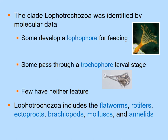Some lophotrochozoans develop a lophophore — a large structure with ciliated extensions that sweeps food toward the mouth. Others pass through a trochophore larval stage during their life cycle, which involves cilia. Some members have neither feature. Major groups of Lophotrochozoa include flatworms, rotifers, ectoprocts, brachiopods, mollusks, and annelids.